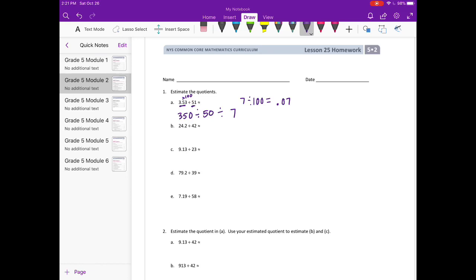24.2 divided by 42. Thinking about my math facts, I see 24 and 4, and I can do 24 divided by 4. I'm going to round 24.2 and make it 240, so I multiplied by 10. Dividing by 42, I'll round to 40. 240 divided by 40 equals 6. But I multiplied by 10, so 6 divided by 10 equals 0.6 or 6 tenths.